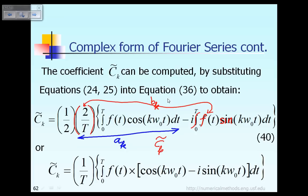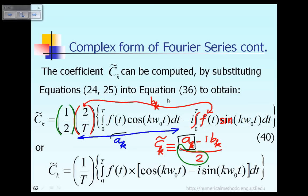C̃_k is defined as a_k minus i·b_k divided by 2. The factor of one-half is exactly this term here. a_k is this term here, minus i is here, and b_k is exactly this term here. So equation 40 can be explained very easily from that definition, as just described.